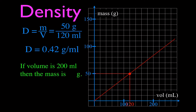We can also find individual values from the graph. For example, if the volume is 200 milliliters, what would the mass be? I go over to 200 on the x-axis and read up to the line. The scale reads 50, 60, 70, 80 — and it looks like less than 85, maybe 83 — so I read that as 83 grams. You can check that: mass divided by volume gives approximately the same density. We can also go the other way.